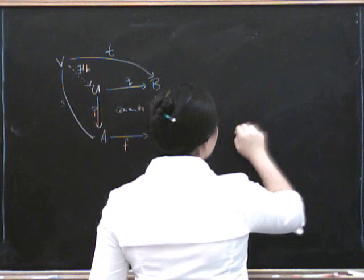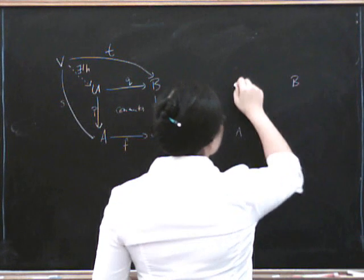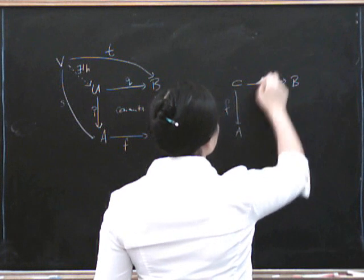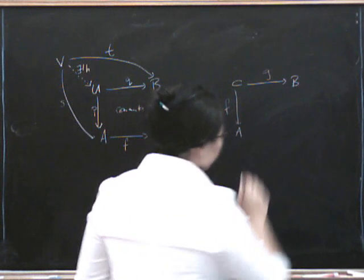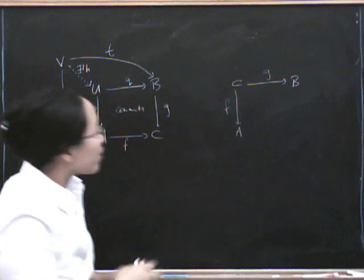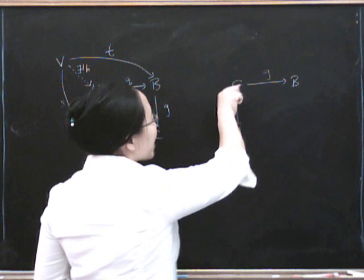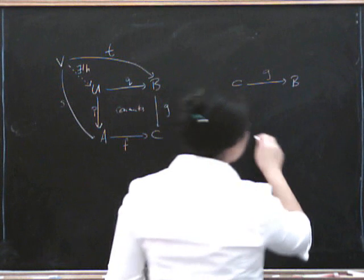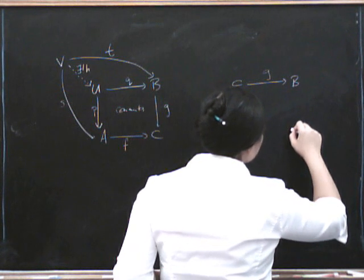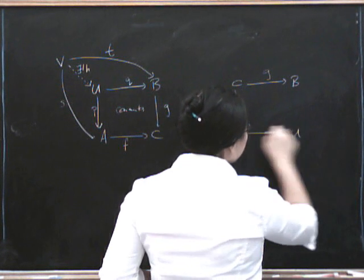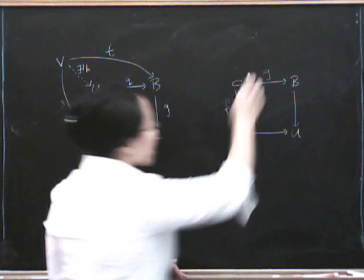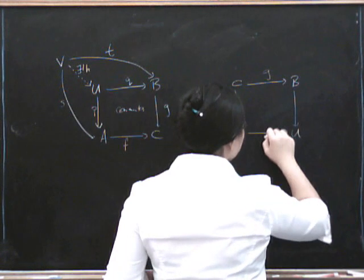Well, we're going to start with the following data. Perhaps I shouldn't have used such similar notation. Oh well. So we start with maps going to A and to B from the same place. And so what's our push-out going to be? It's going to give us a vertex here, U, the universal one, together with a pair of insertion maps like this, making this diagram commute. So this is a commuting square.